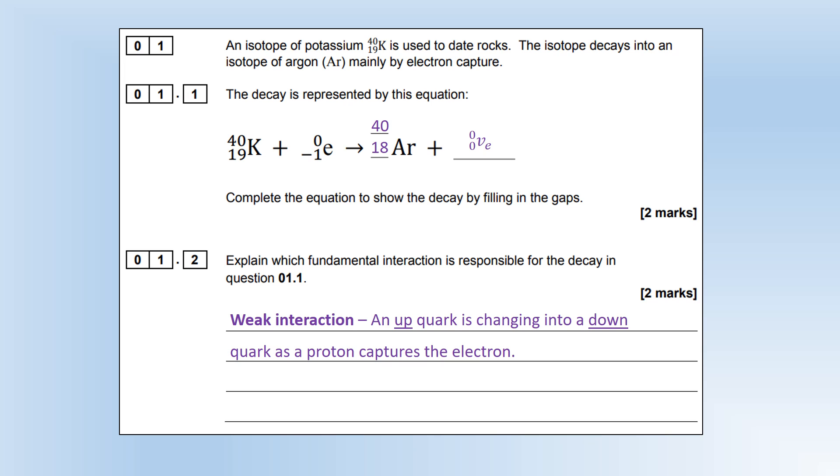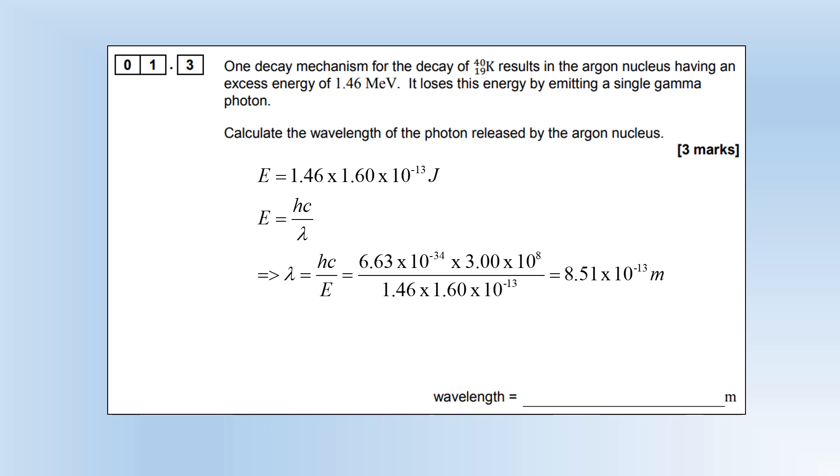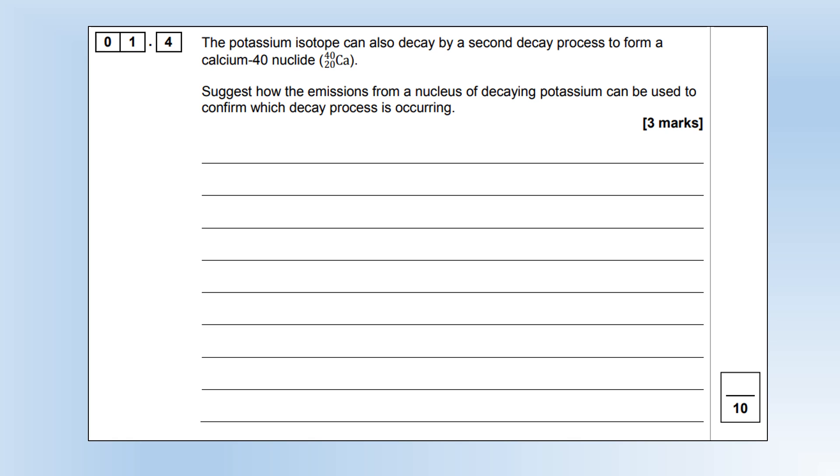One decay mechanism for the decay of these particles results in it having excess energy, and it loses the energy by emitting gamma photons. Calculate the wavelength of the photon released by the argon nucleus. We first need to convert 1.46 MeV into joules, then we just plug it into our equation to calculate the wavelength. Fairly straightforward.